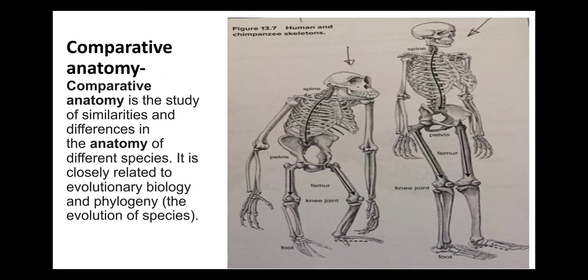Phylogeny means the evolution of species. In different species, certain similarities indicate the development of humans from unicellular to multi-system organ level. We can see certain similarities between humans and monkeys, such as a standing position. This study relates to any part, organ, viscera, or bone from ancestors — meaning previous species.